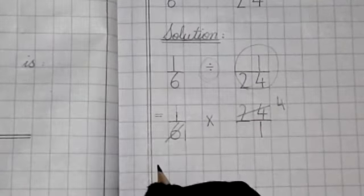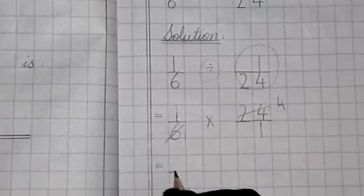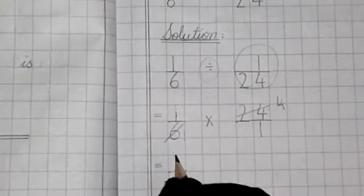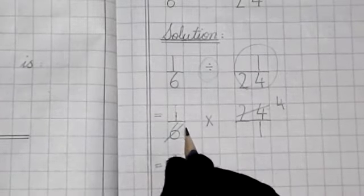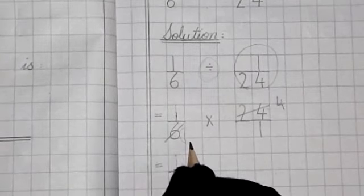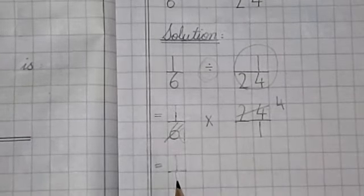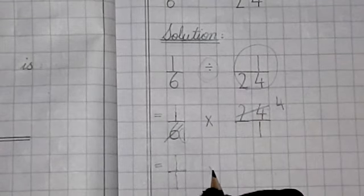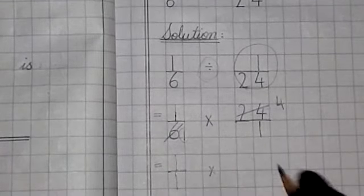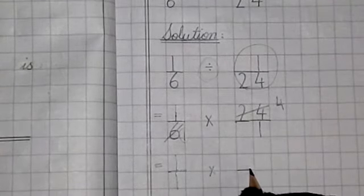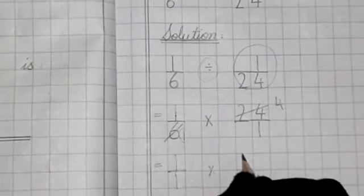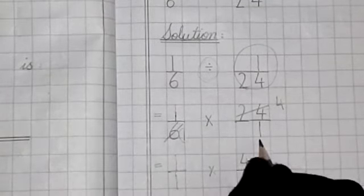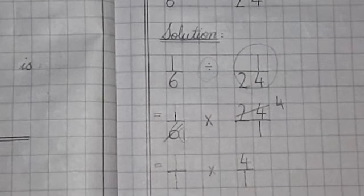Again, next step, equality sign. 1 is the remaining. This is 1. 1 divided by, sorry, 1 was the denominator. We have 1 here. Multiply sign. Next. Numerator is 4. And denominator is 1.